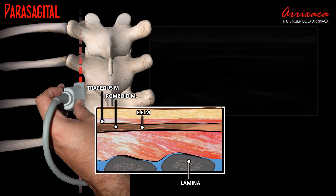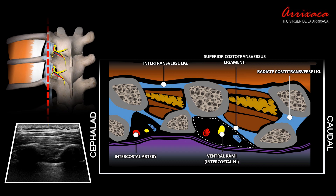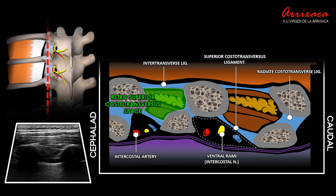The distinct sawtooth or tile-like image will indicate that we are over the lamina. Above the tip — the distal end of the transverse processes — we will identify intertransverse ligaments, superior costotransverse ligaments, and costotransverse radiate ligaments. The retrosuperior costotransverse space is found posterior to the costotransverse ligament.